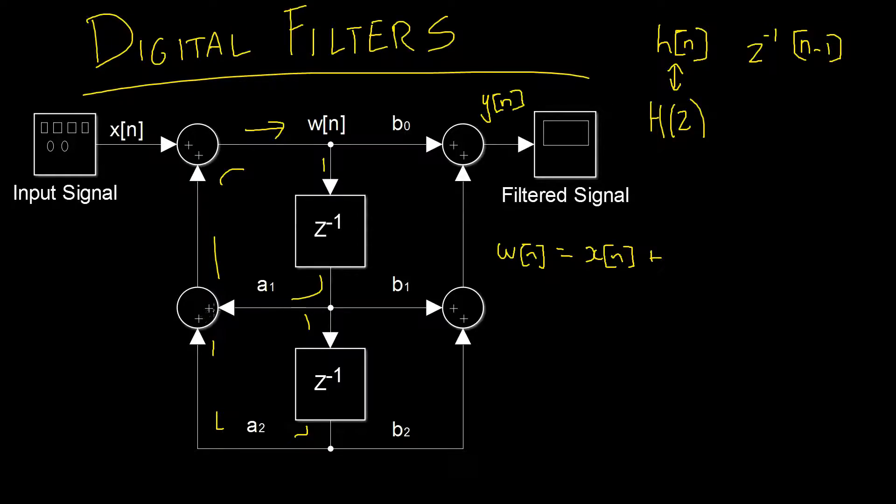Well, we can do plus, as it's being added back into the system, w of n minus 1, because that's just a sample from one turn ago. Then we also multiply that by our scalar a1. Then we also have this last loop to take care of, where there's now a two sample delay, as there's a minus 1 here, a minus 1 here, which will give us w of n minus 2, and then again scaled by a2. Okay, so we've got our equation for w of n.